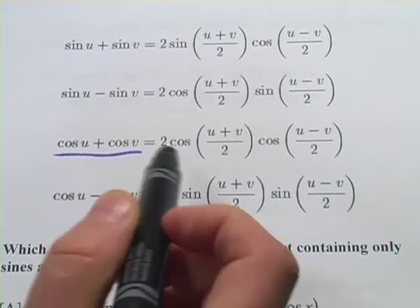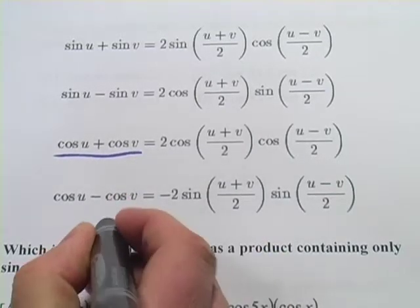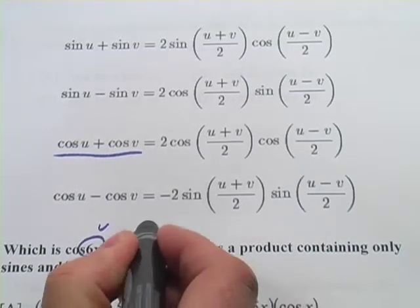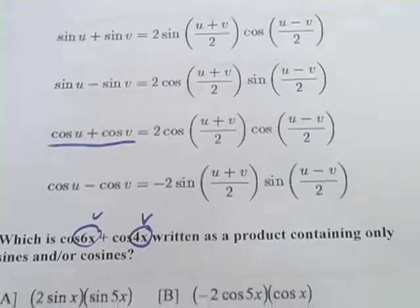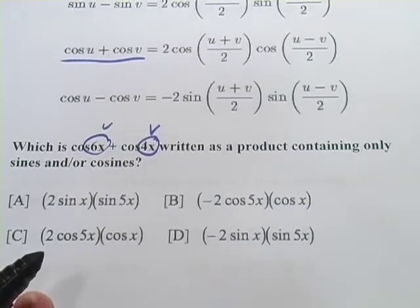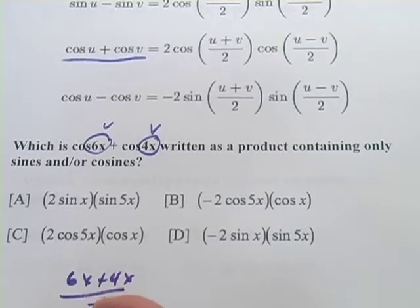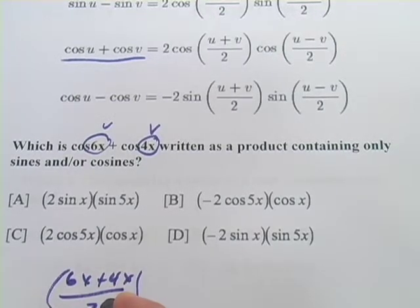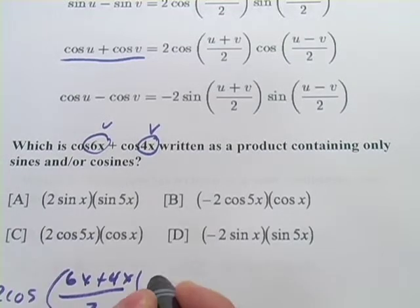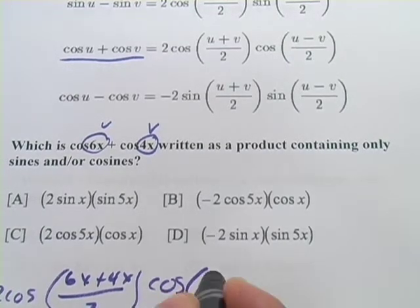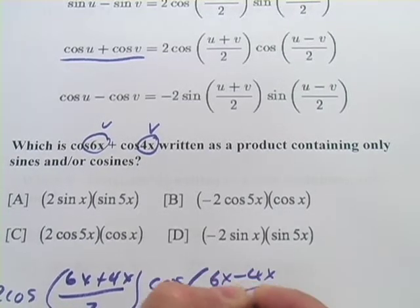And what we're going to do is simply take 6x and sub it in for u, and 4x and sub it in for v. So if we're going to do that here, we've got 6x plus 4x over 2, and that's multiplied 2 times the cosine. And that's multiplied by cosine of u minus v, so 6x minus 4x over 2.